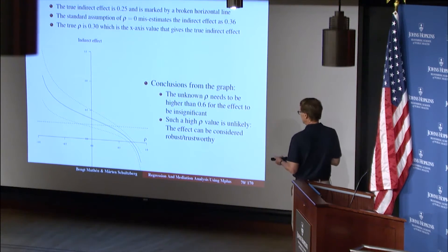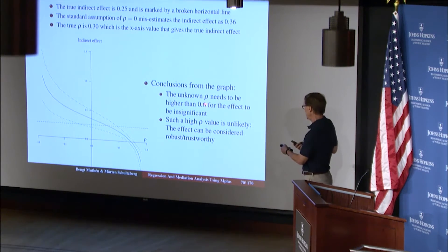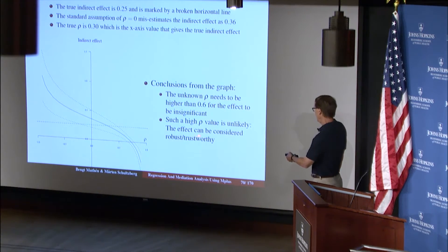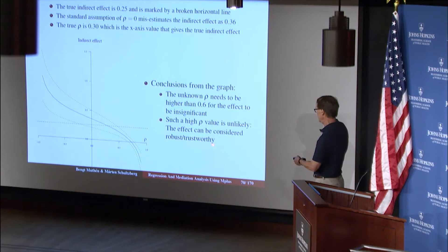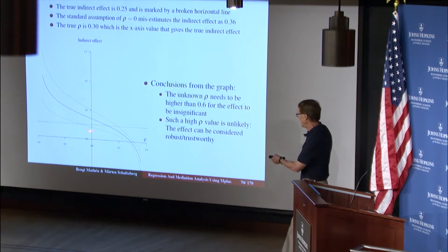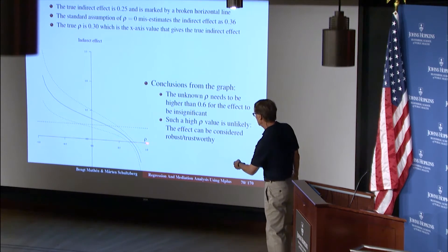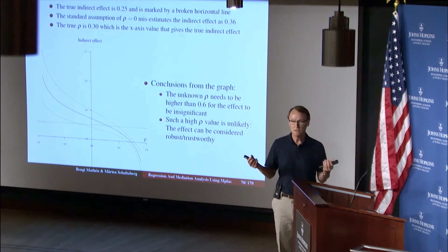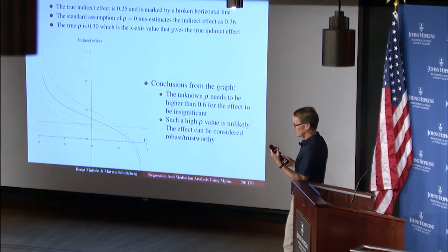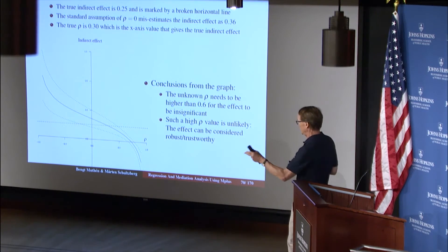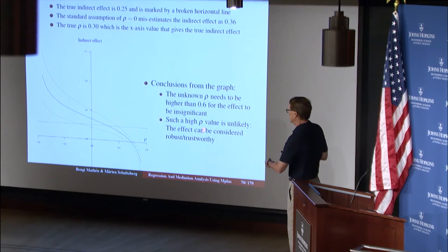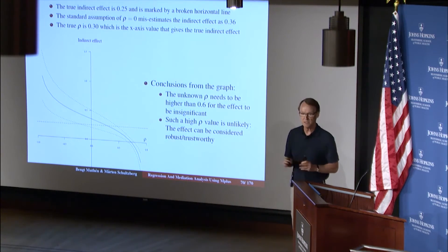So the way you reason about this, you say that kind of a high rho value, 0.6 is a high residual correlation, is unlikely to happen. So you could reason about that. Therefore, the effect can be considered trustworthy or robust. If that line had crossed the y equals 0 line here somewhere for a very low rho value, you wouldn't have much confidence in the indirect effect, because there's so many factors that can come into play, unobserved variables, not measured variables that influence both m and y.